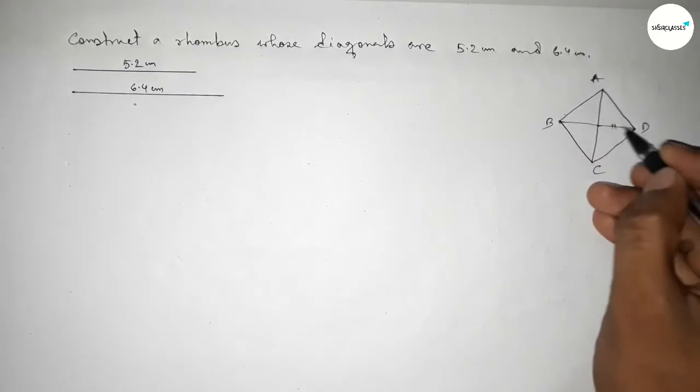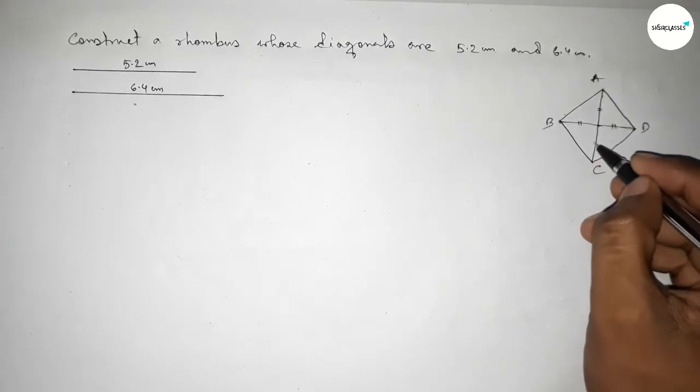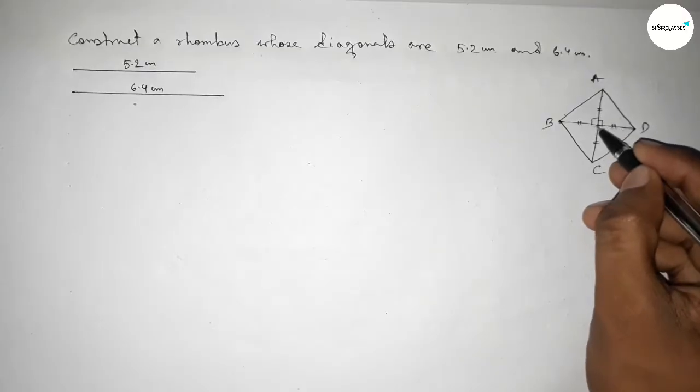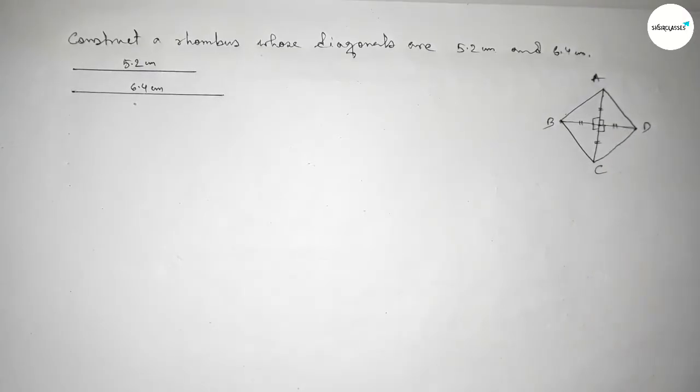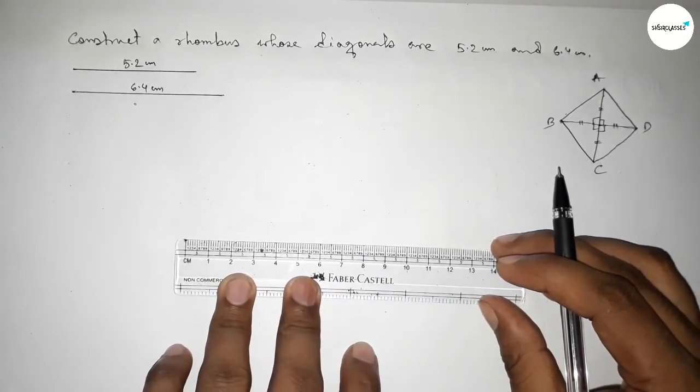Here both the diagonals intersect at a point and bisect each other equally. So this side and this side are equal, and this side and this side are equal, and here they create a 90-degree angle.